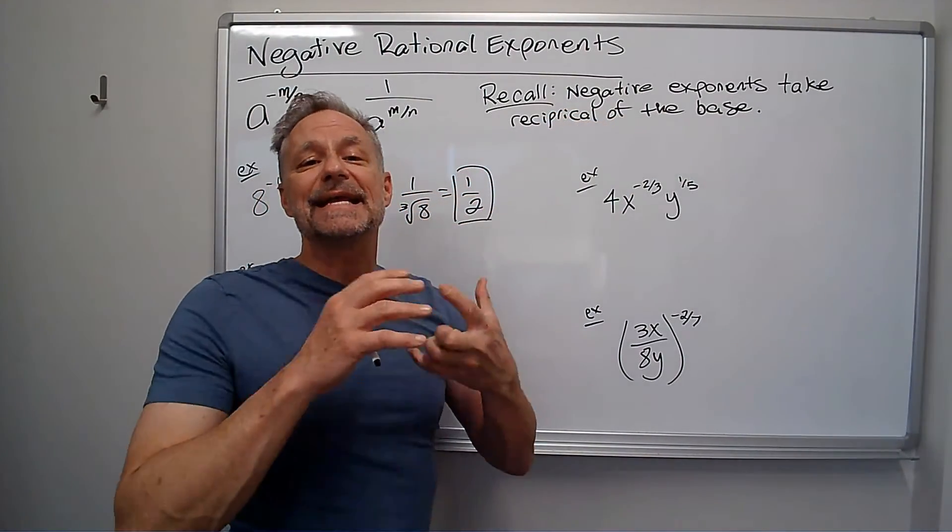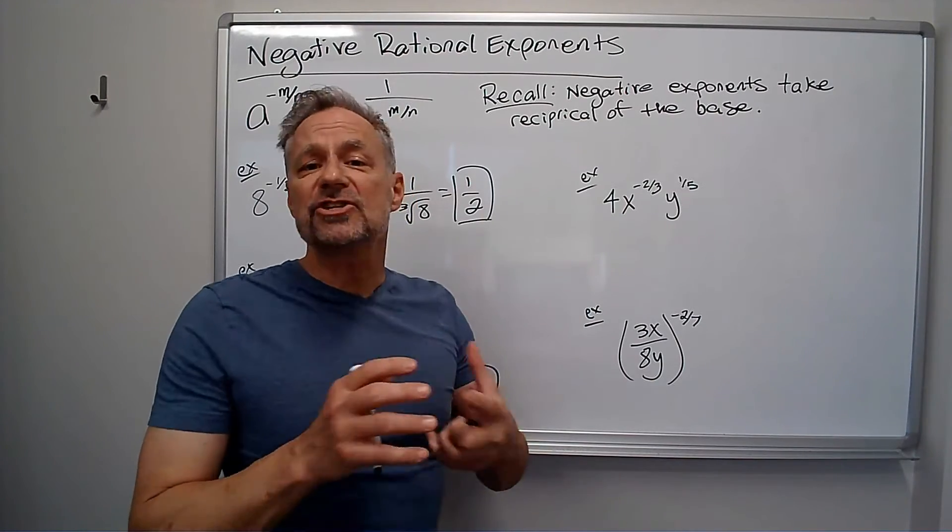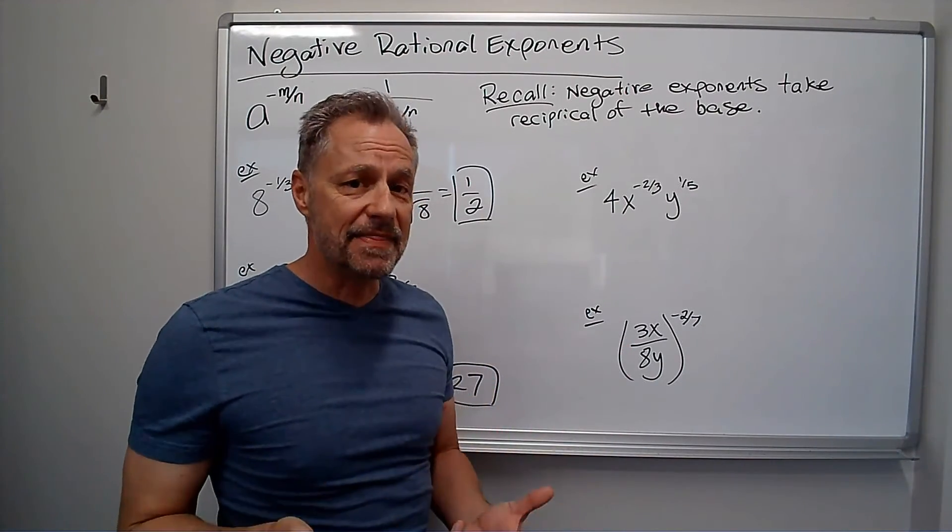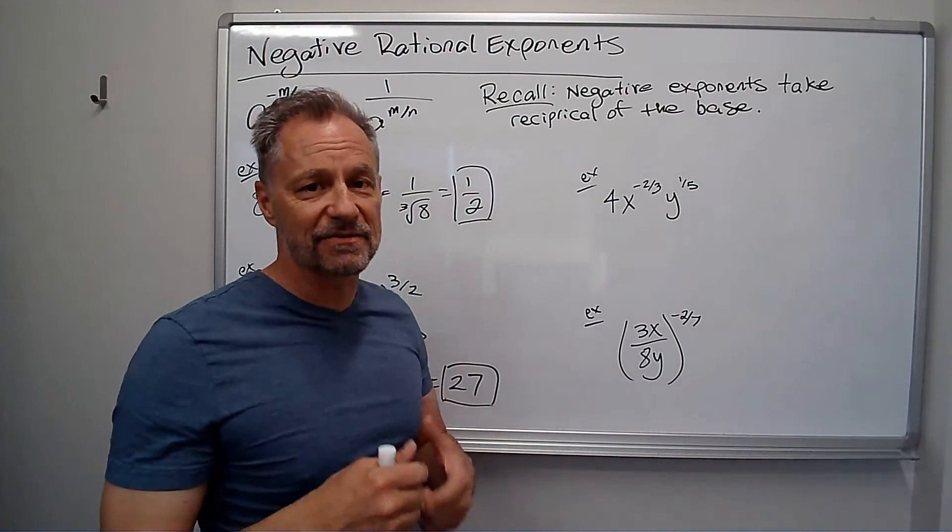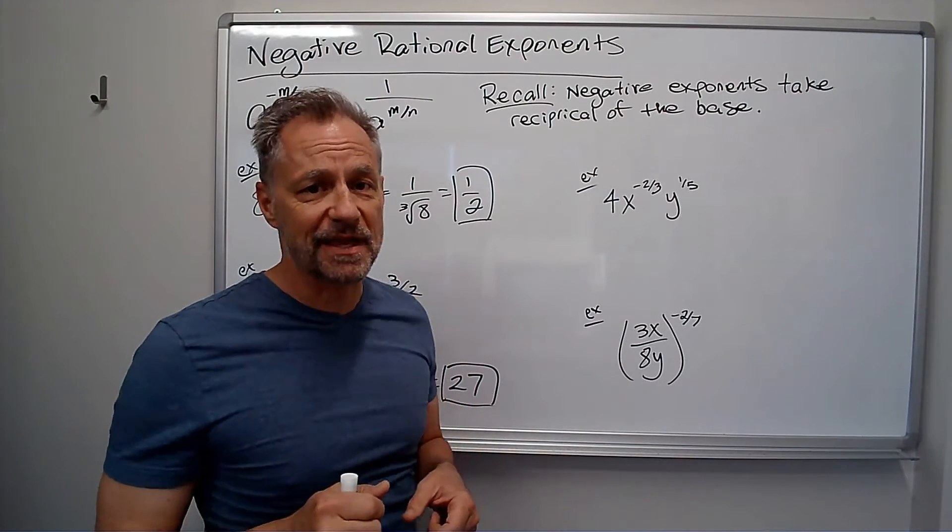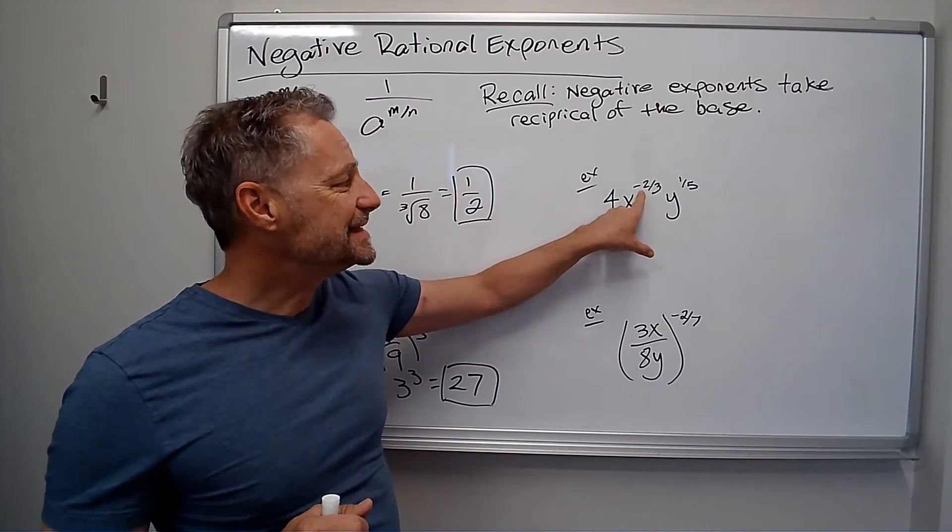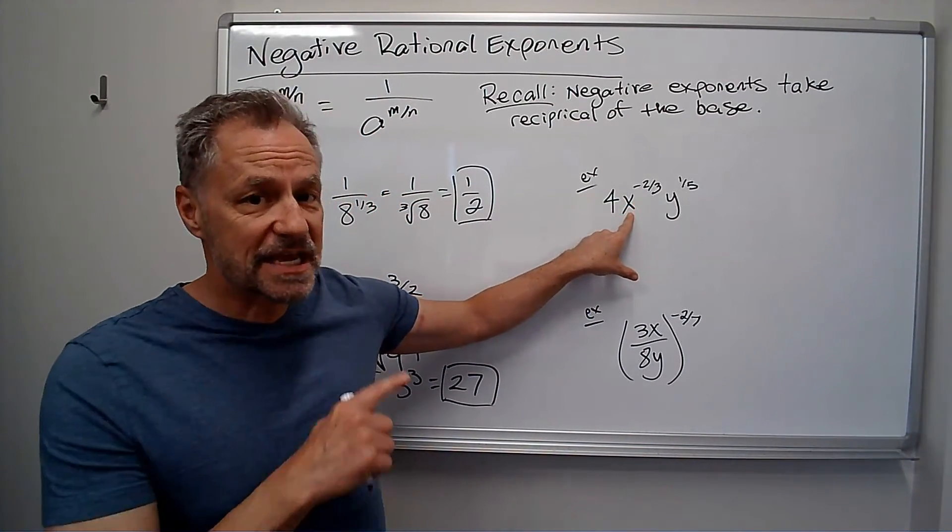Now, the rule is you can't end with negative exponents. An answer can't have negative exponents in them, and so we're trying to get rid of the negative part of the exponent, and then simplify anything else we can. Well, this negative exponent only relates to the x, not the 4.